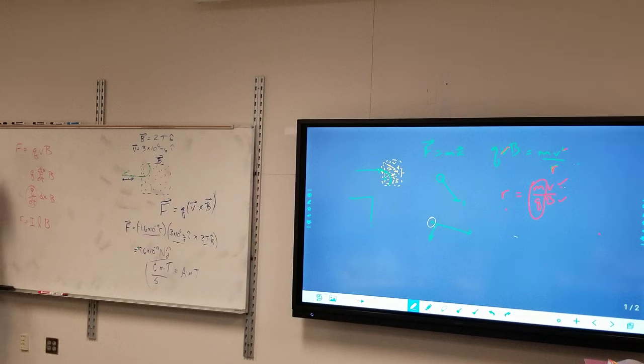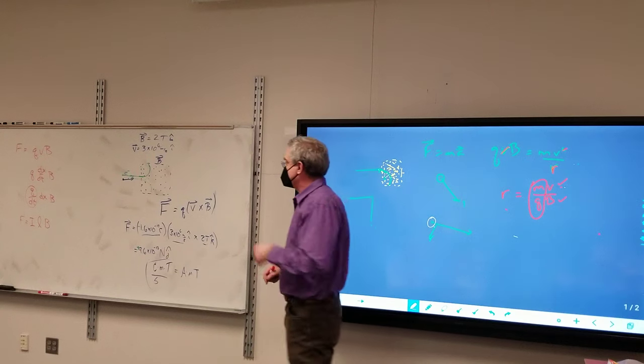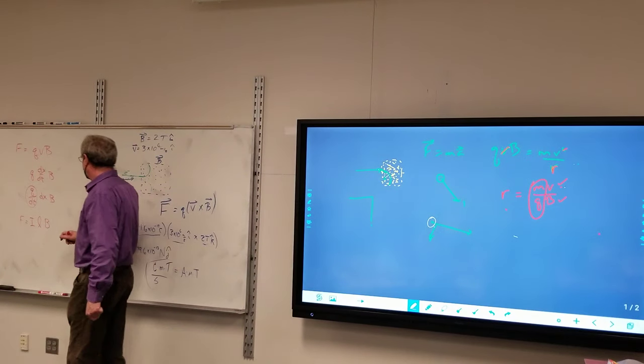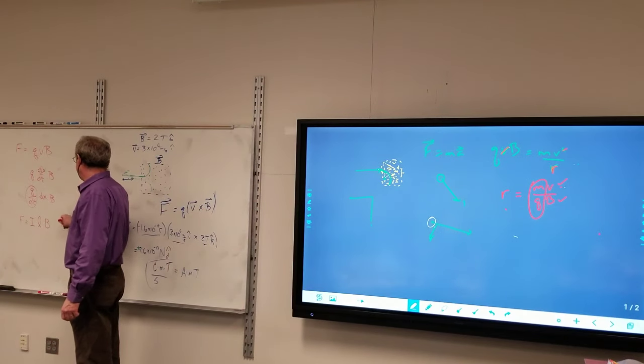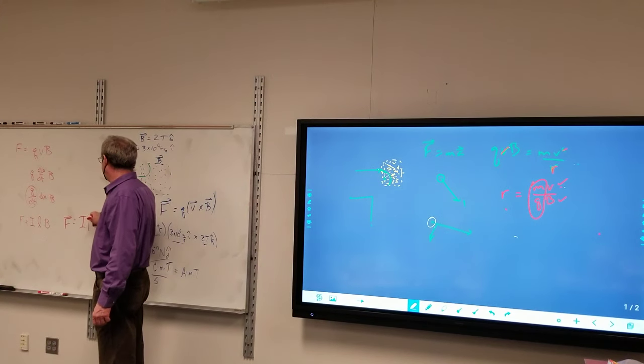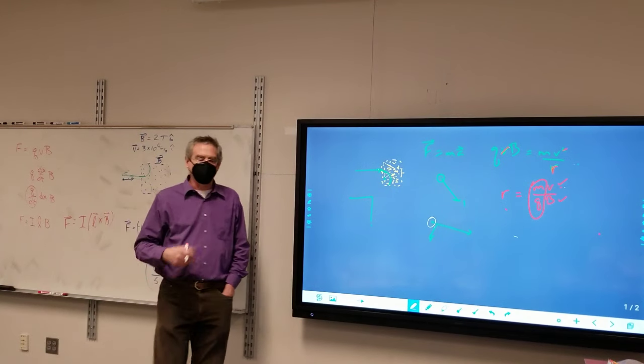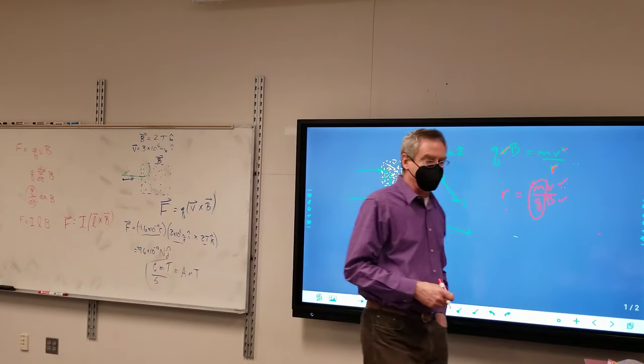And so we have a force on a charge, sorry, a force on a current in a magnetic field. We then throw the vector piece into it. I is a scalar, but L cross B. Where the direction of that length is the direction of the current flow.